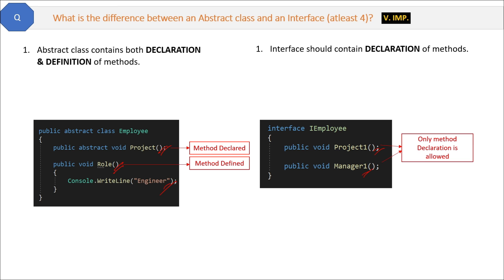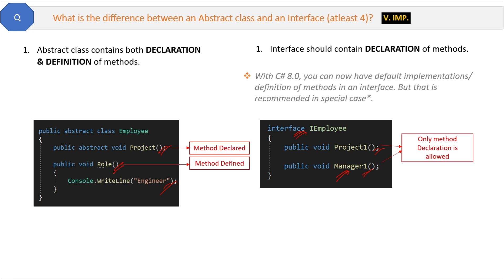There is one very interesting point here. As per the latest versions of C#, C# now allows you to define the body of interface methods as well. Why did Microsoft allow this? Suppose you have a very big project — an Employee Management System — and initially you created an IEmployee interface with declared methods. After one year, you realize a method's implementation is now common. If you change the interface to an abstract class, a lot of code changes will be required in your big project, leading to errors. Therefore, Microsoft allowed method bodies inside interfaces.